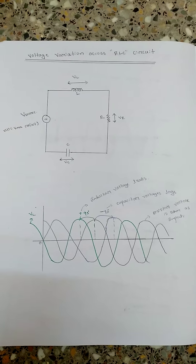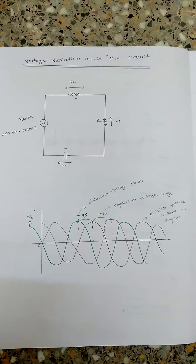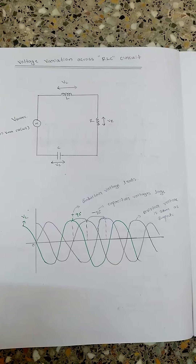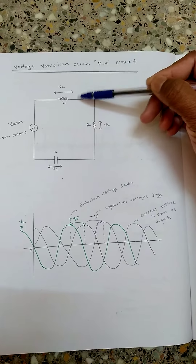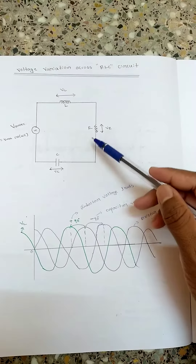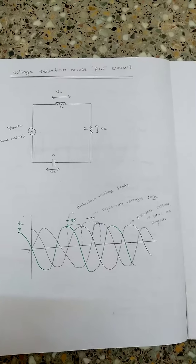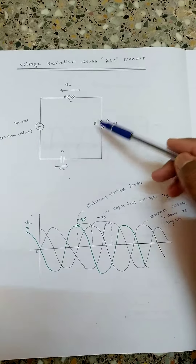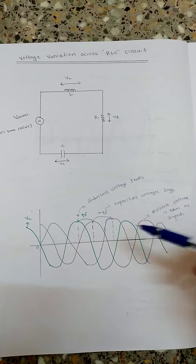Hello everyone, welcome. In this video we are going to see voltage variation across an RLC circuit. This is basically a series RLC circuit and it has a special property: the voltage across the inductor leads by 90 degrees compared to the resistor, and the voltage across the capacitor lags by 90 degrees compared to the resistor. We will discuss this property and draw the graph.